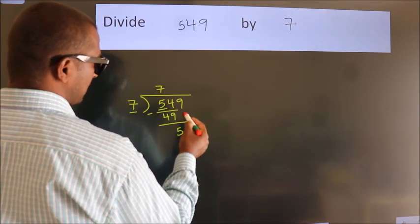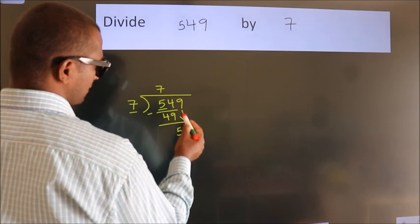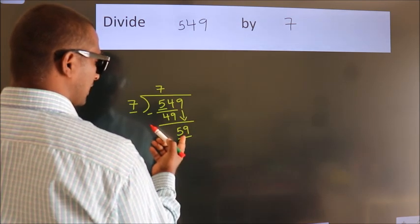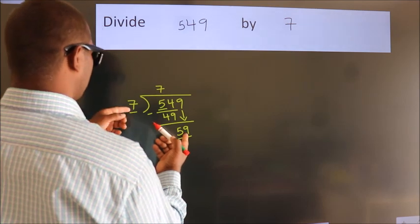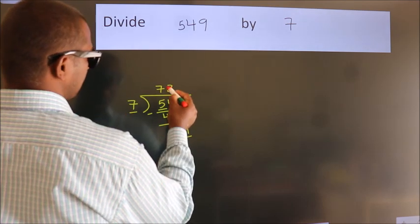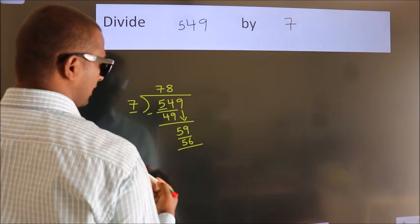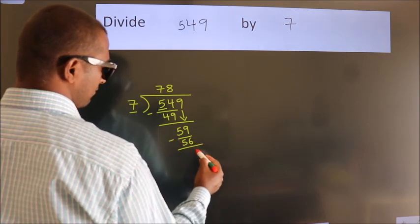After this, bring down the beside number. So 9 down. So 59. A number close to 59 in the 7 table is 7 times 8 equals 56. Now we subtract. We get 3.